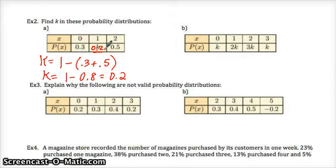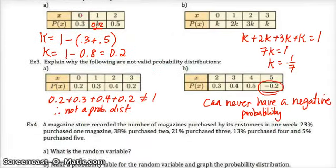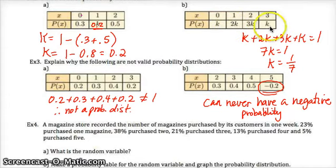I would pause right now and finish 2A, 3A, and 3B — try to answer on your own, then come back and check. For letter B, you should have added K plus 2K plus 3K plus K together, which has to equal 1. All those probabilities had to add to 1, so K would equal 1/7.